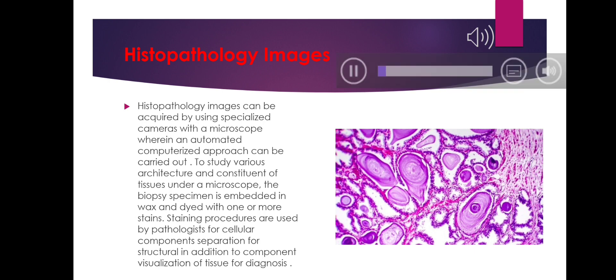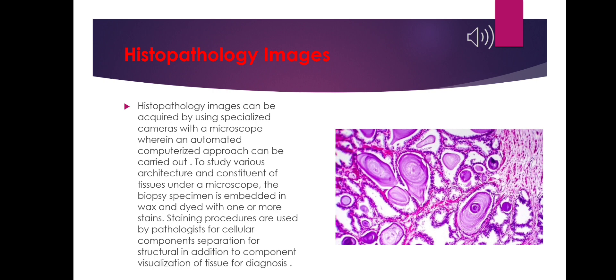In addition, histopathology images can be acquired by using specialized cameras with a microscope wherein an automated computerized approach can be carried out. To study various architecture and constituents of tissue under a microscope, the biopsy specimen is embedded in wax and dyed with one or more stains. Staining procedures are used by pathologists for cellular components separation and for structural and component visualization of tissue for diagnosis.